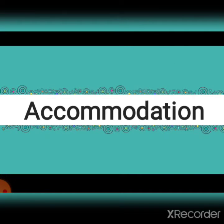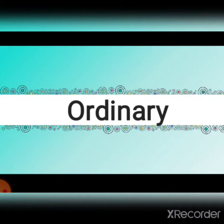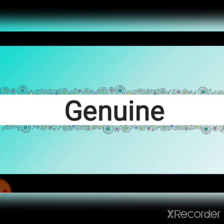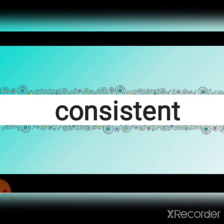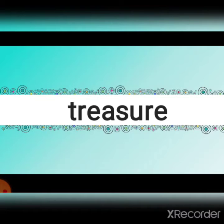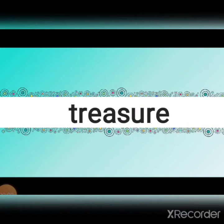Accommodation — nivastan. Ordinary — sadharan. Genuine — asli ya wastavik. Consistent — niyamith. Treasure — khajana. So friends, yaad hai sab kuch ya kuch bhool gaye? Bhool gaye toh koi baat nahi.